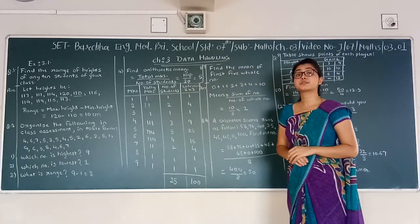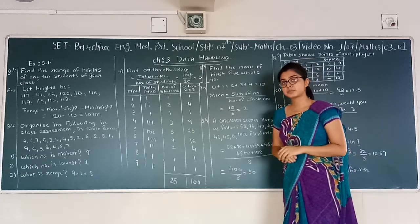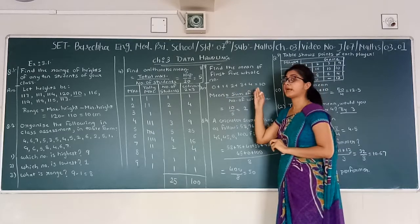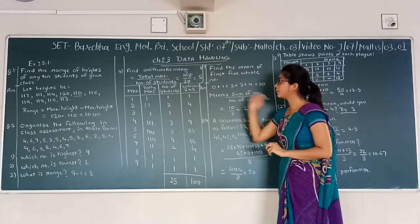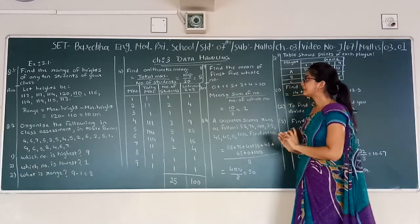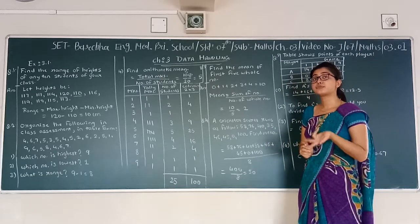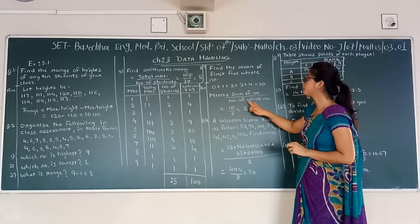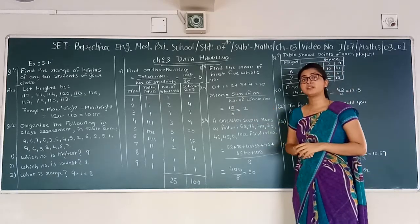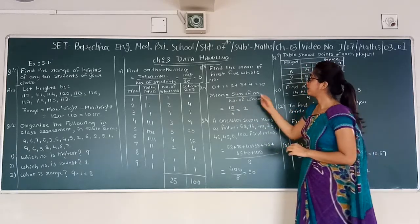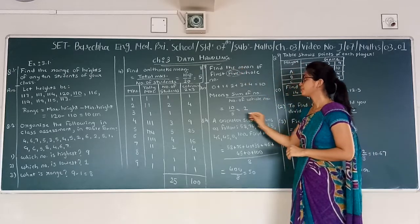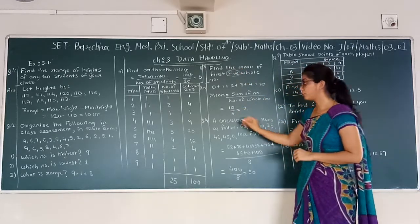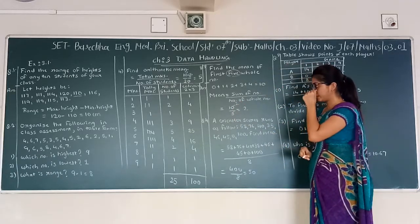Next question: find the mean of the first 5 whole numbers. The first 5 whole numbers are 0, 1, 2, 3, and 4. The total of these numbers is 10. To find the mean, we use sum divided by count of numbers. The sum is 10 and the count is 5, so 10 divided by 5 equals 2.